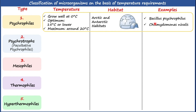Bacillus psychrophilus, a bacterium, is a very good example of a psychrophilic microorganism. Chlamydomonas nivalis is a protist and is responsible for an interesting phenomenon called watermelon snow — it produces red-colored spores that give a red color to glaciers.